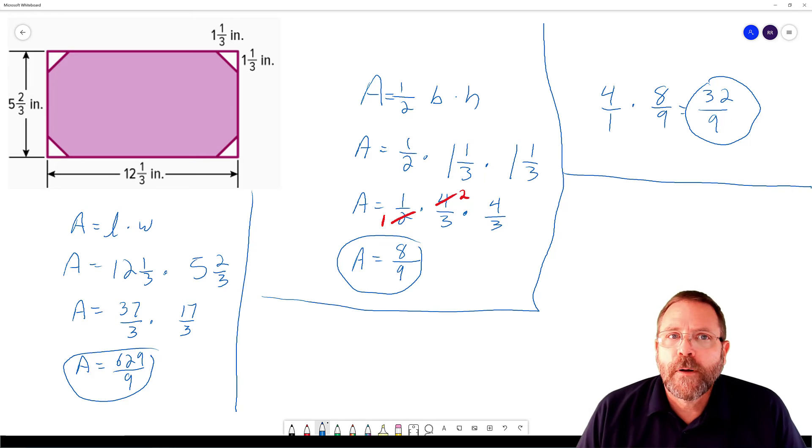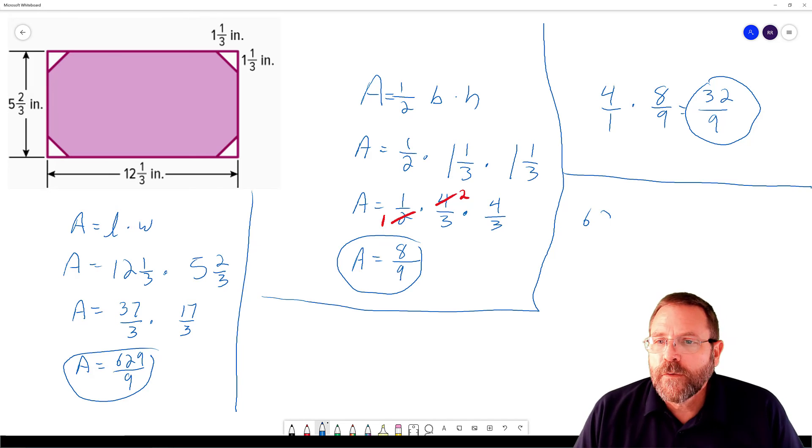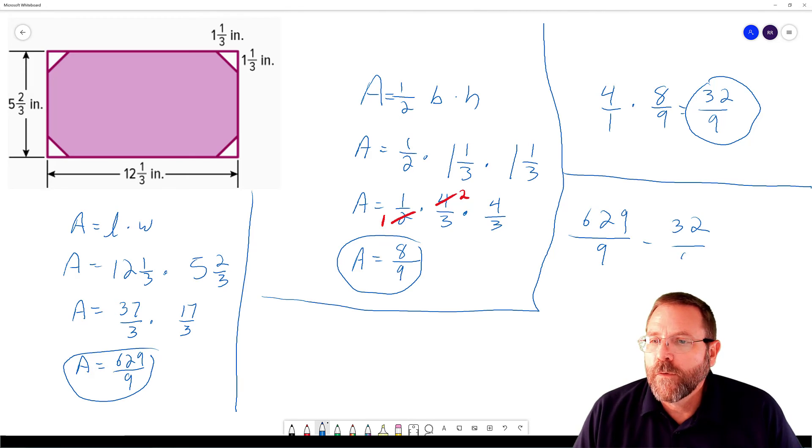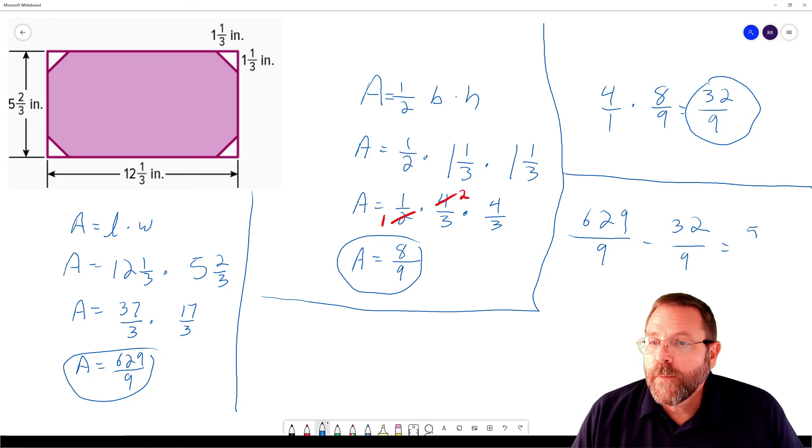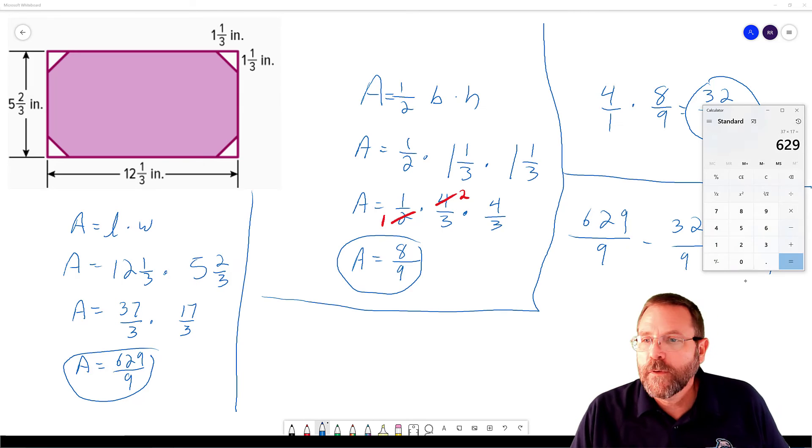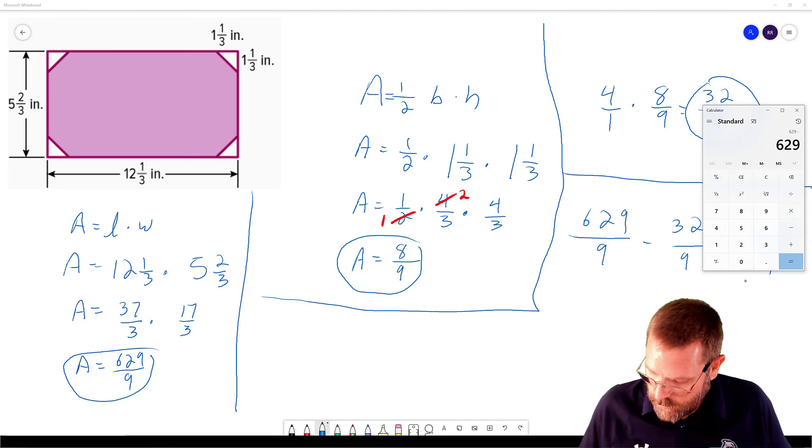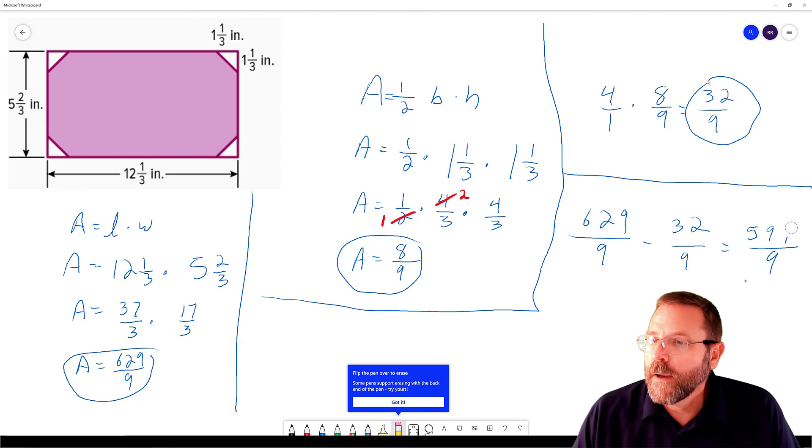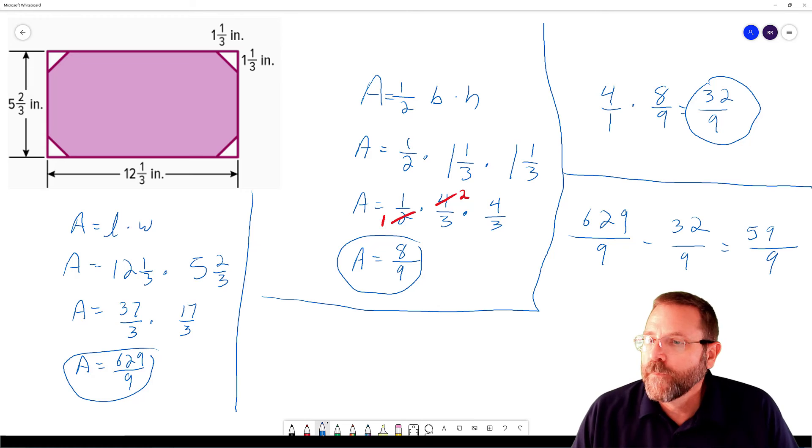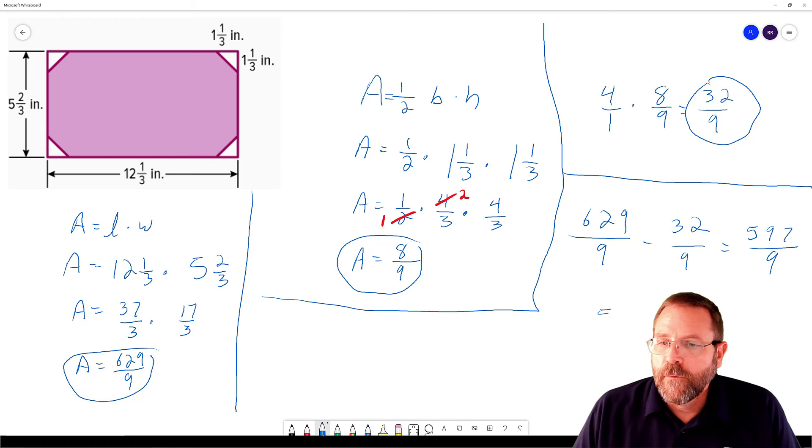Now it's time to finish our problem. We're going to take our rectangle, which was 629 over 9, we're going to subtract 32 over 9. They were kind enough to give us a common denominator for this one. And that's going to end up leaving me with, let me check that real quick so we don't make a silly mistake. So 629 minus 32, oh 597, my bad. So we're going to erase that 9 and make it a 7. And now we're going to take and do 597 divided by 9.